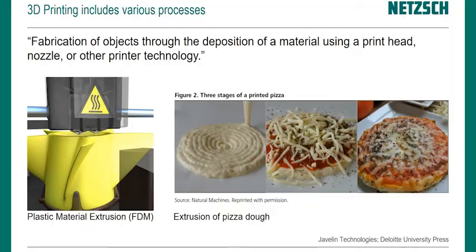On this slide we see that what we normally think of as 3D printing is plastic material extrusion — FDM — where a printhead deposits liquid polymer layer by layer. But as the definition of 3D printing goes, as long as material comes out of a nozzle or printhead, it can be defined as 3D printing. So even this production of a pizza is a 3D printing process — you can see the dough is printed in circles — just to illustrate how broad the terminology of 3D printing can be.